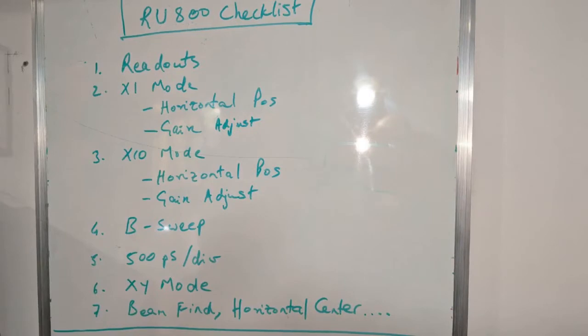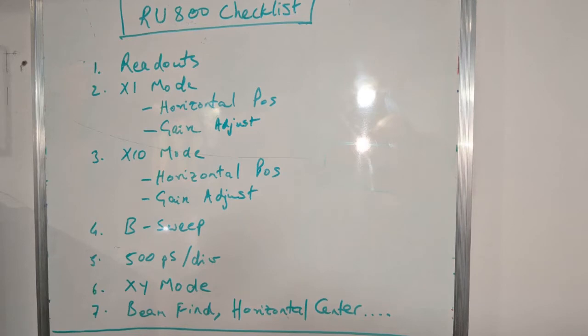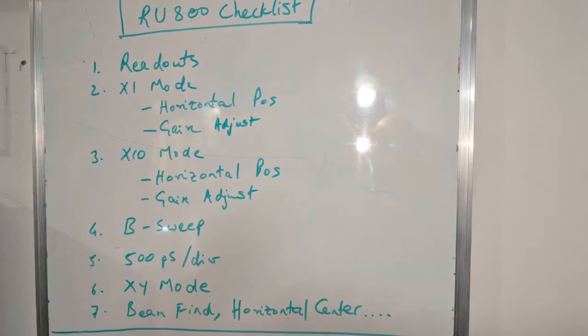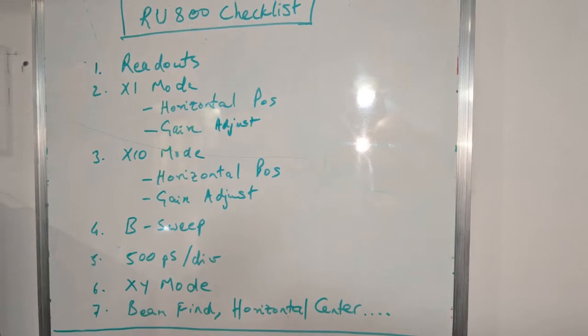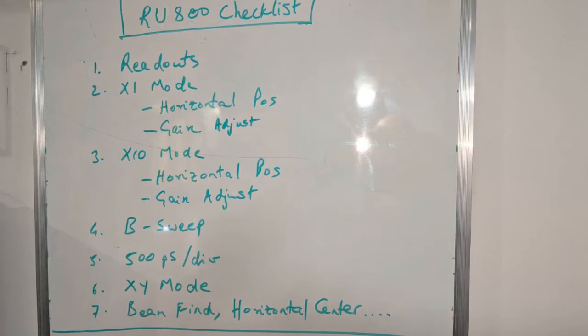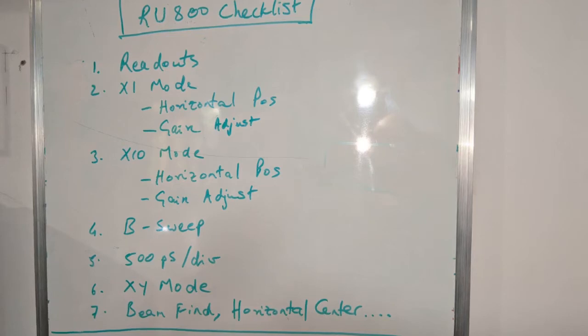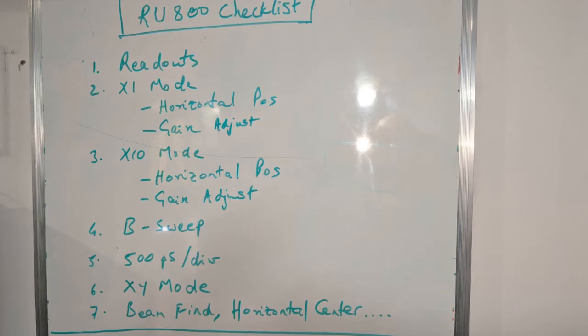To be able to vet the performance of this drop-in board and compare it with the original U800, I created a little checklist, a performance checklist. I call my drop-in board the RU800, which stands for RAM's U800. First things first, the readout should be crisp and clear. Secondly, in the x1 mode the horizontal position knob should work as intended and there is a gain adjust trimmer for the x1 mode on the main board which should allow you to trim the gain in the x1 mode. In the extend mode, the horizontal position knob should allow you to pan back and forth 10 screenfuls and the extend gain adjust trimmer on the main board should allow you to further refine the gain in the extend mag mode.